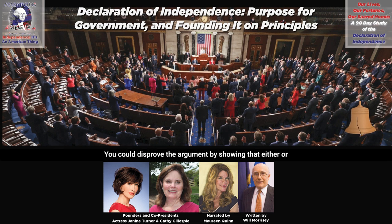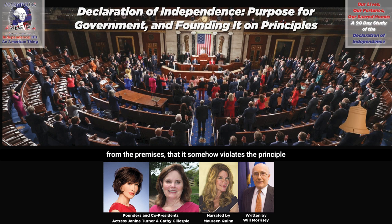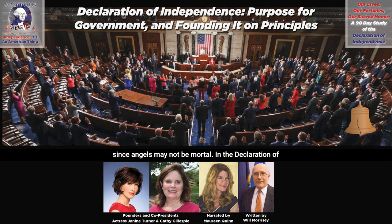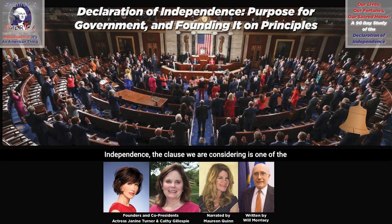You could disprove the argument by showing that either or both premises is false, or that the conclusion doesn't follow from the premises — that it somehow violates the principle of non-contradiction. For example, if the Socrates you are referring to is an angel, the conclusion is wrong, since angels may not be mortal. In the Declaration of Independence, the clause we are considering is one of the several main premises of the argument.